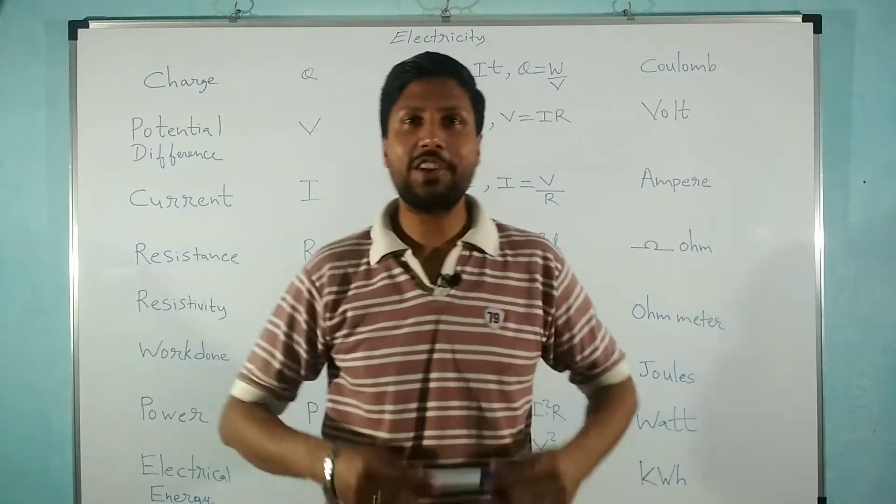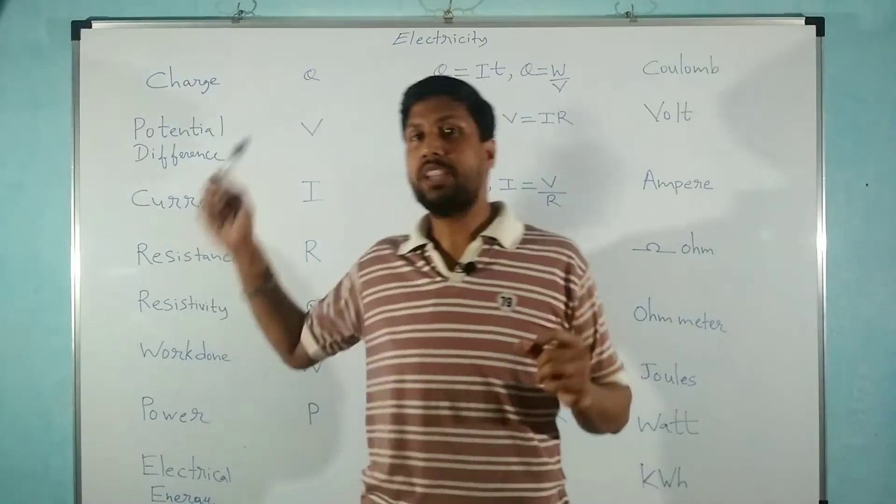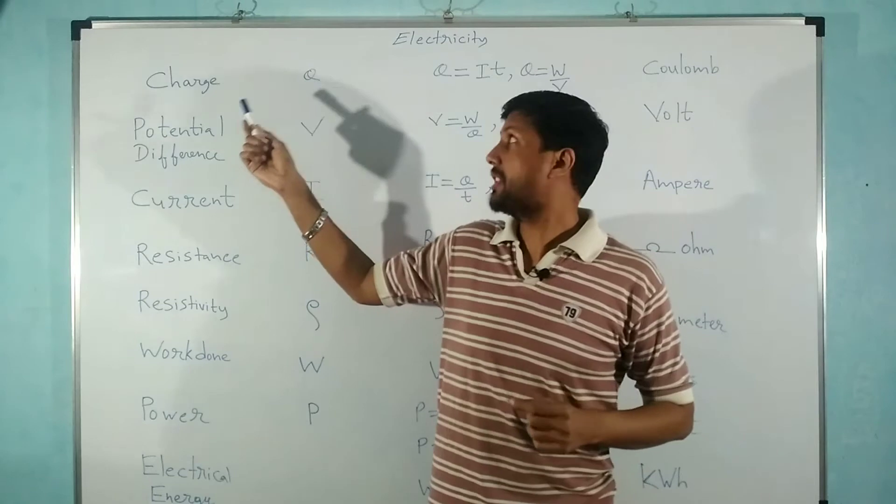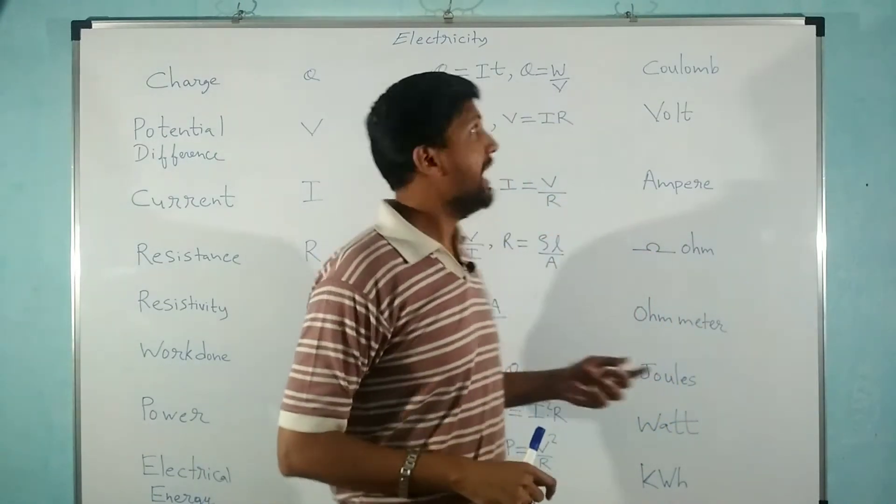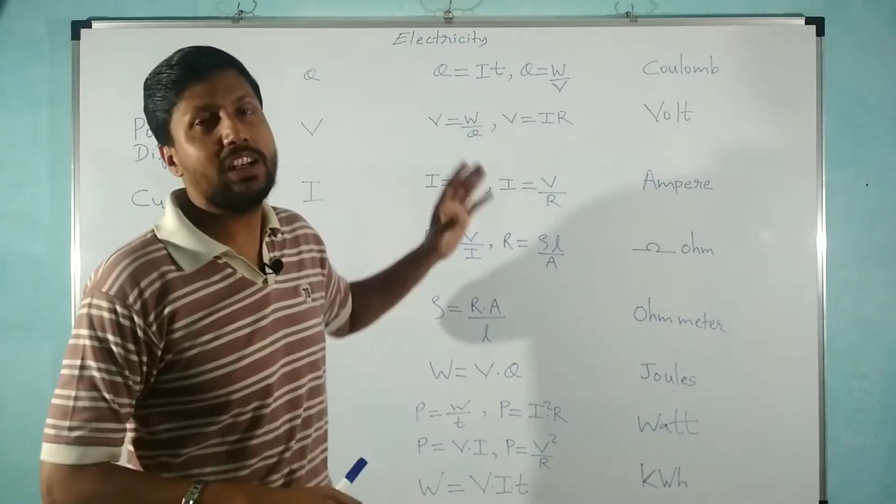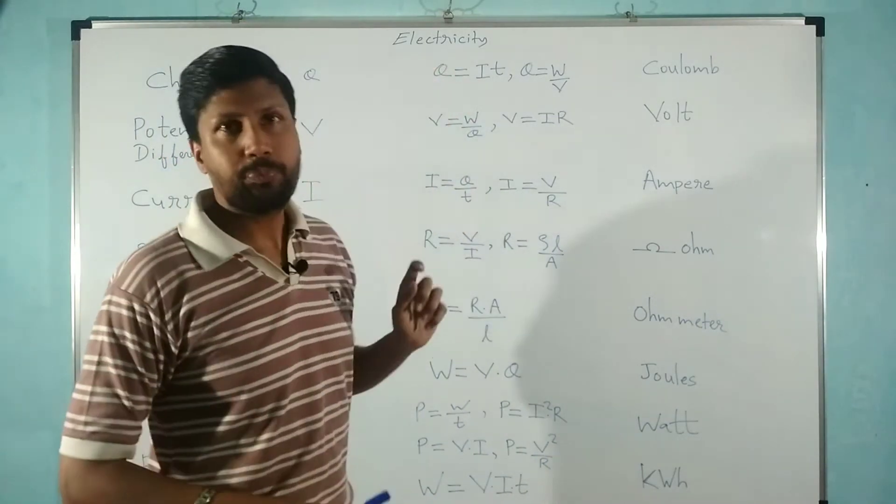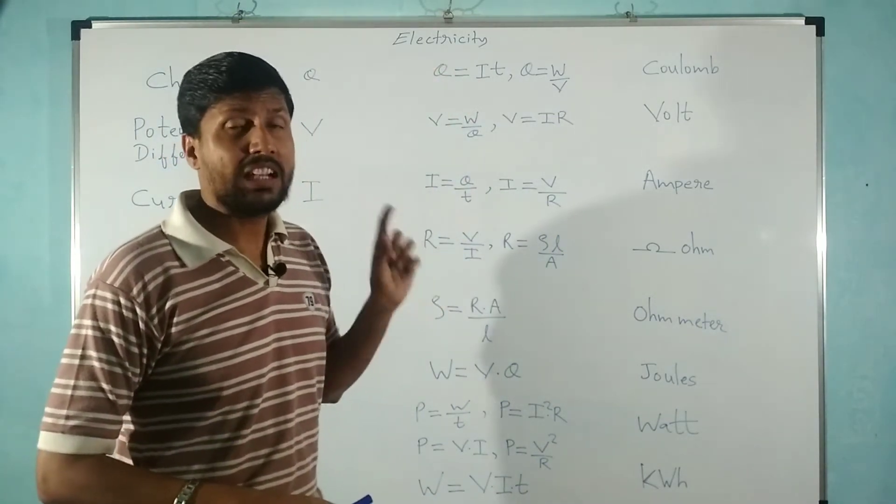Hello everybody, this is Meg Raj and I welcome you to my YouTube channel. Charge is represented by capital Q, measured in coulombs. The formula for current is I equals Q upon T, that is current equals charge upon time, the rate of flow of charge.